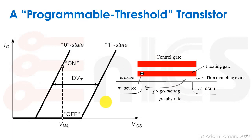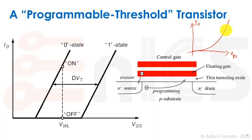In a flash or floating gate device — and in many NVMs including resistive devices — what we're doing is programming the threshold voltage. This is a programmable threshold transistor. Looking at the VGS–ID graph with a piecewise linear model at VT*, we can shift the characteristic curve: moving VT from VT0 to VT1. If we put VDD on the word line and the cell is at VT0 (erased), the transistor turns on. If programmed to VT1 (a higher VT), even VDD on the gate is less than VT and the transistor stays cut off.